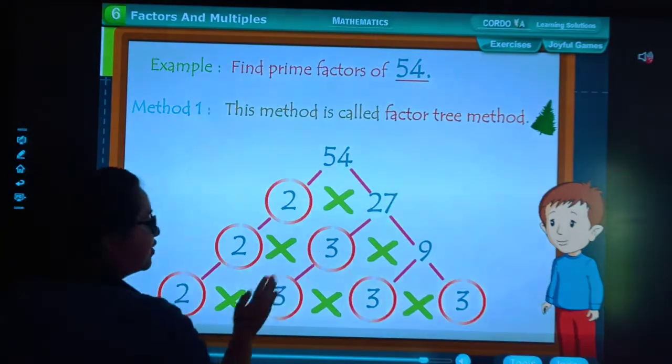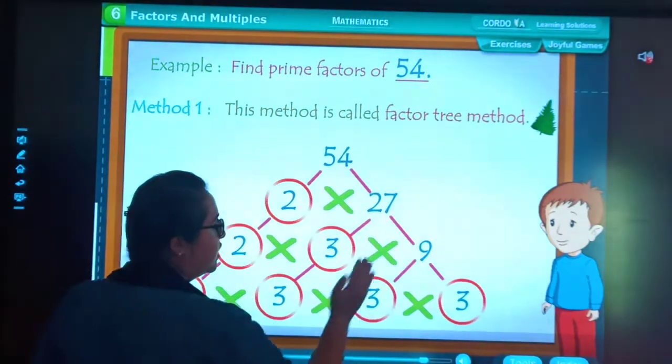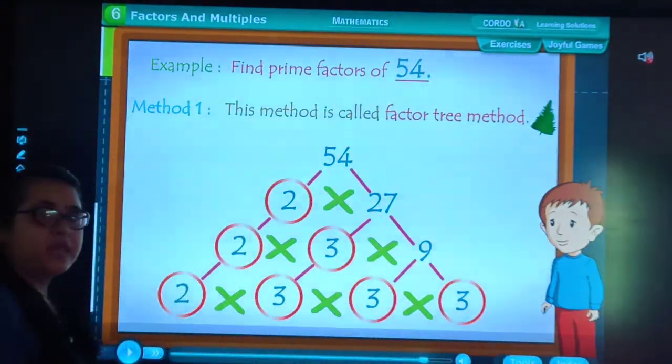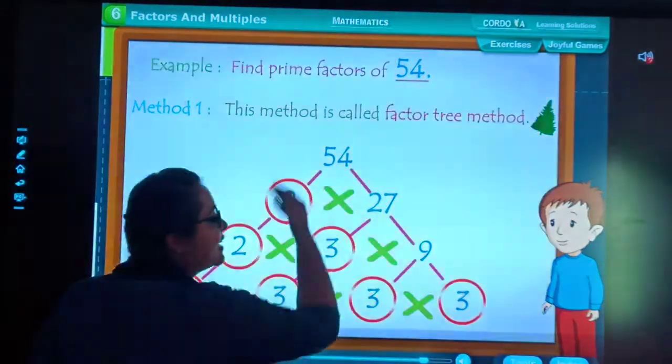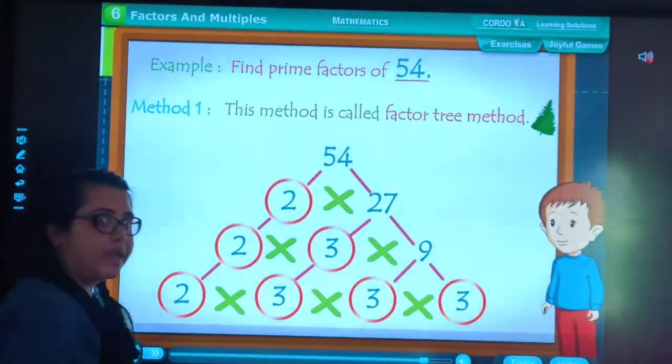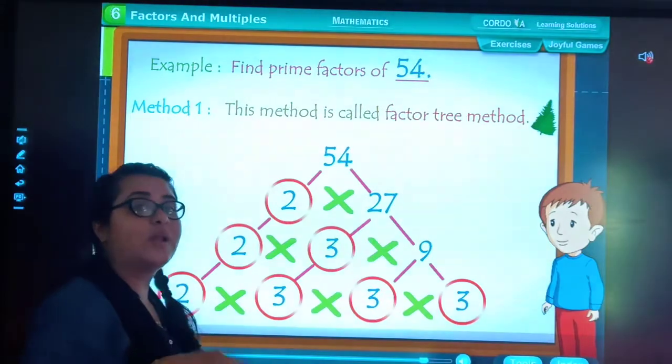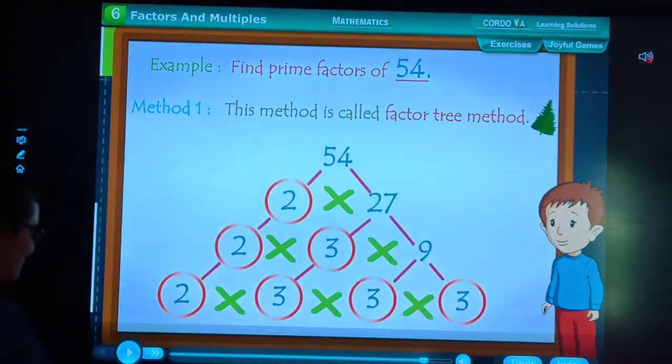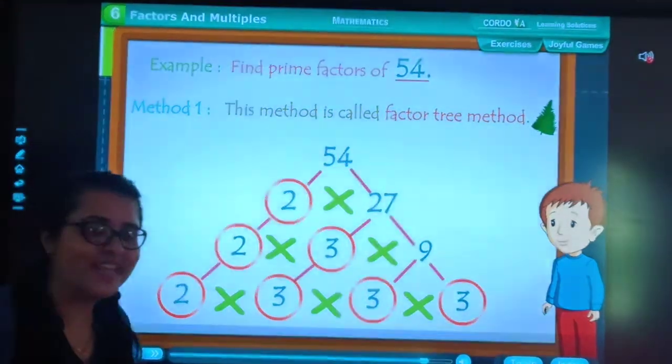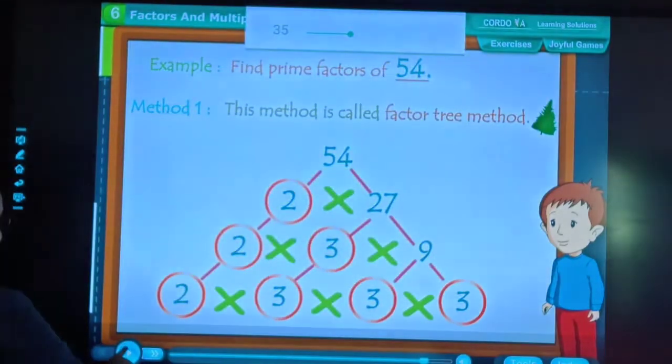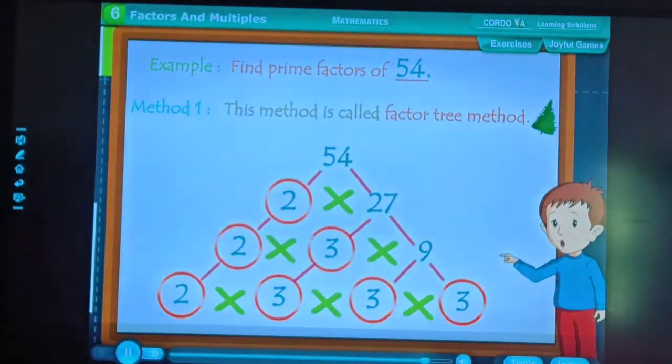27 is split over 3, 9. 3 will be split as 3, 9 will be 3, 3. And thus, you take a number and factorize it. This is called factor tree method.